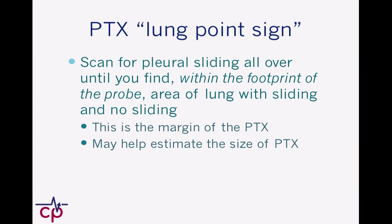If you're a pro, you can find the lung point sign, which is the inflection point of the pneumothorax. Looking between the rib interspaces at the pleura, if on the same image — within the footprint of the probe — you're seeing an area of lung sliding and then an area of no lung sliding, this is actually the margin of the pneumothorax. This is where the pleura is adjacent and then splits apart.